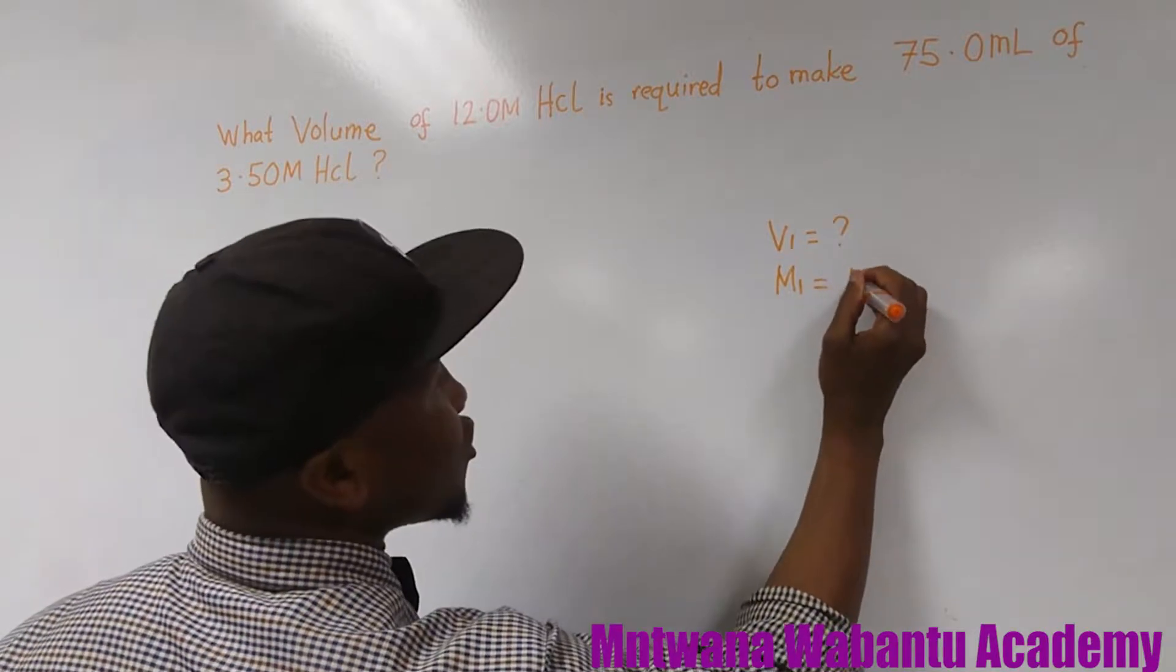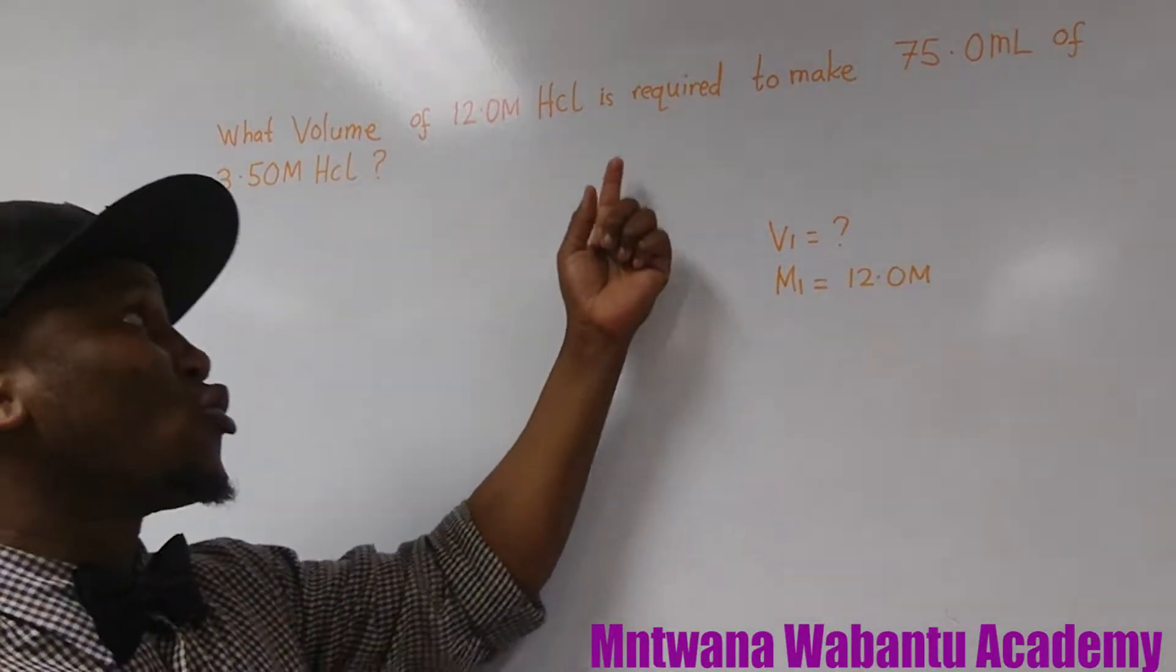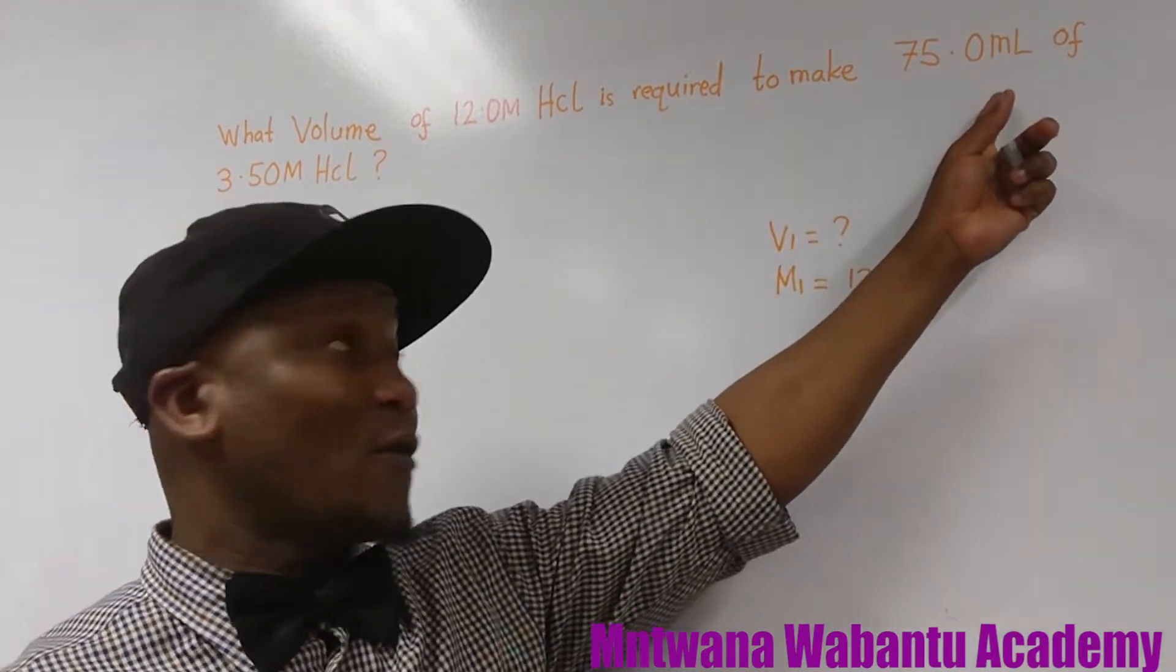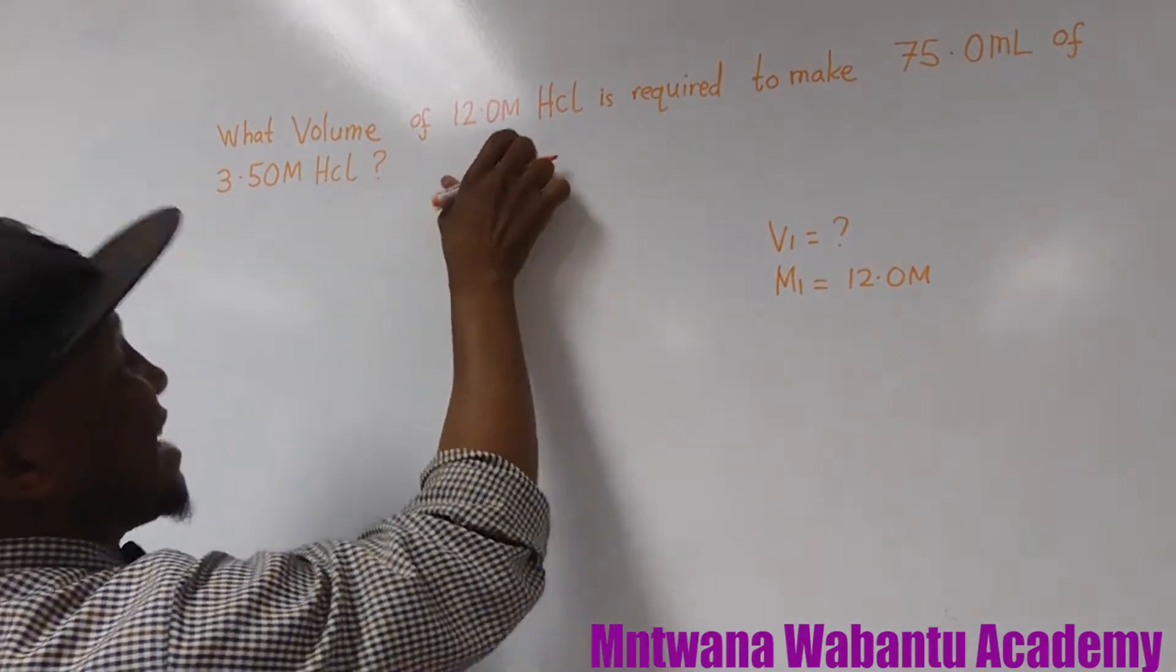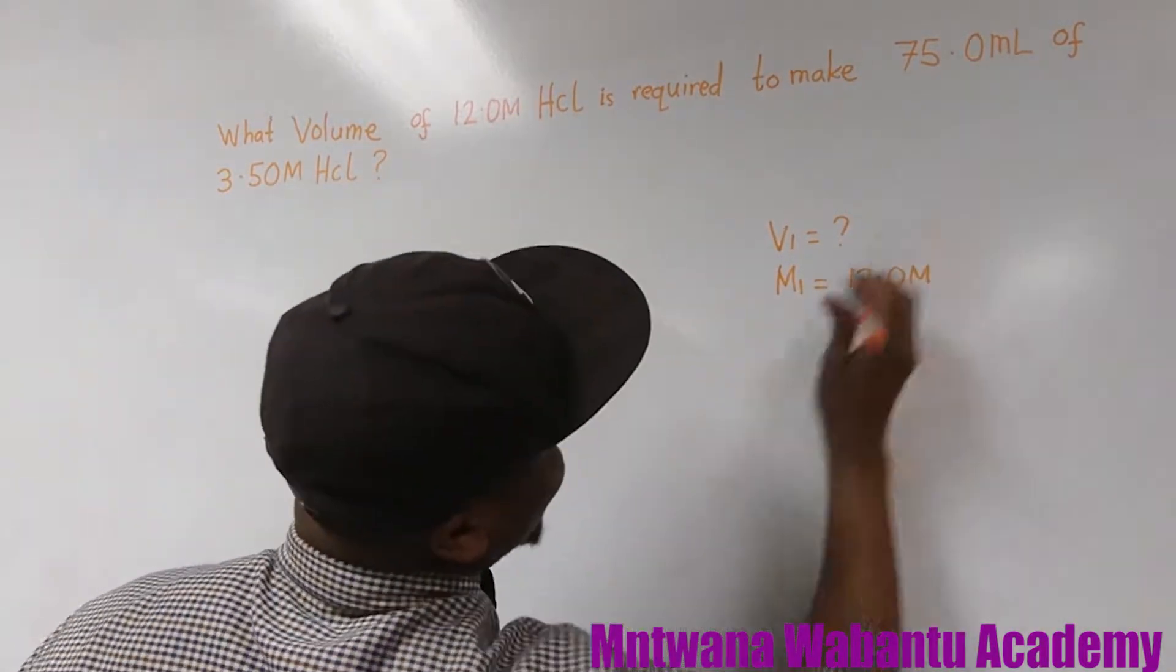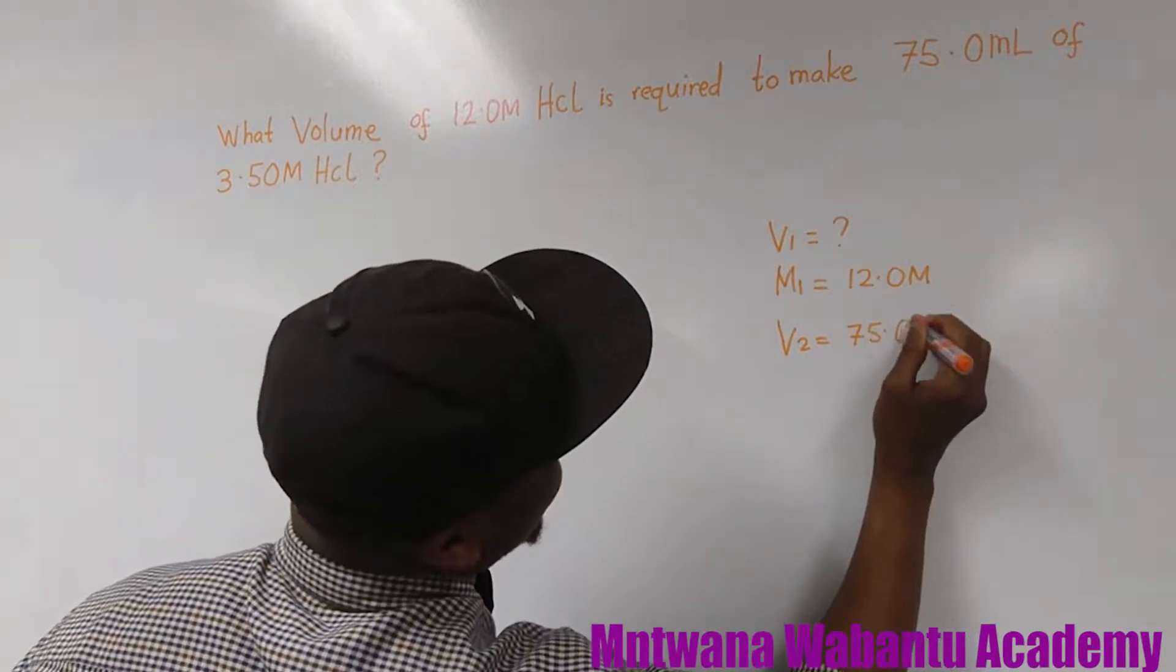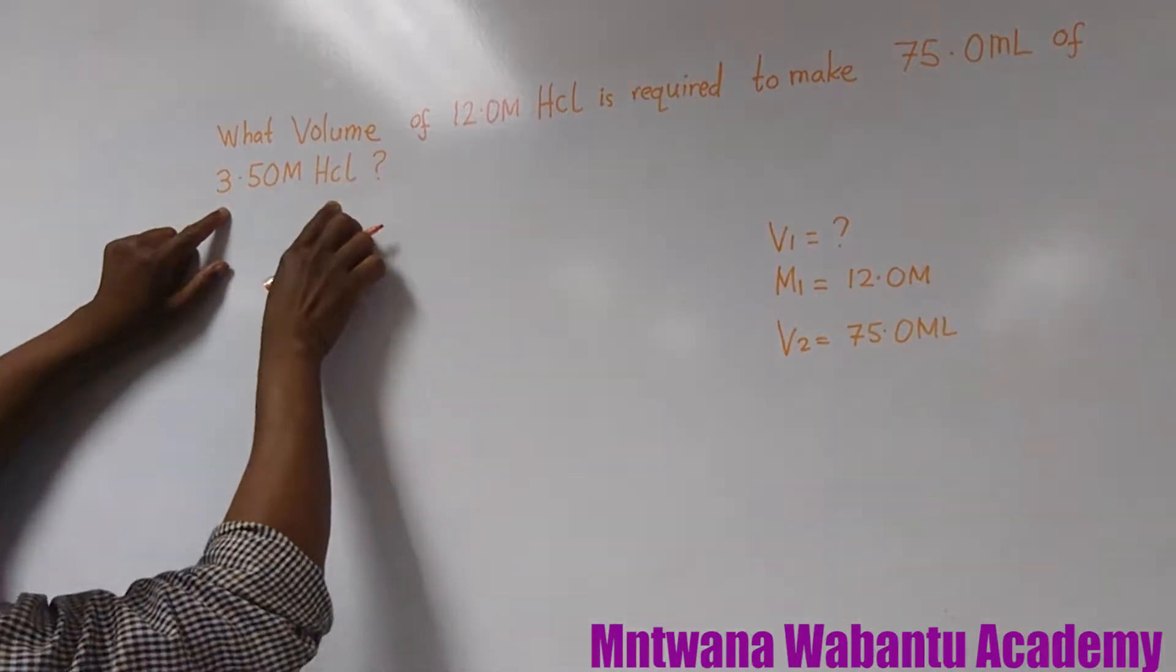So let's call this molarity 1 equal to 12.0M of hydrochloric acid, which is required to make, we got another volume here. So let's call it, so this volume which you don't know with its molarity which you know, it has to make 75.0 milliliter. So we have a volume 2, 75.0 milliliter of hydrochloric acid.